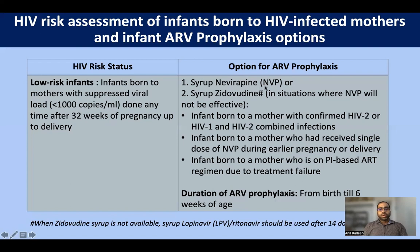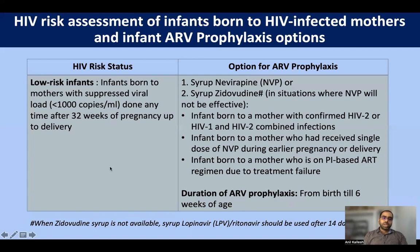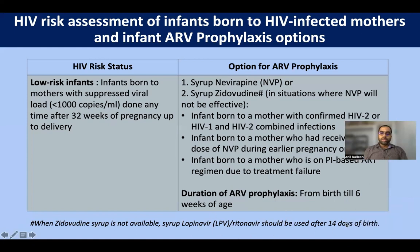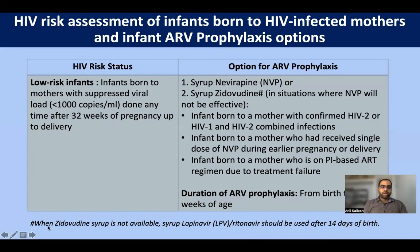Zidovudine is used instead of nevirapine in specific situations: infants born to HIV-2 positive or HIV-1 and 2 co-infected mothers, mothers previously given single-dose nevirapine in a prior pregnancy, or mothers on a protease-inhibitor-based regimen. Prophylaxis is given for six weeks in low-risk infants. If syrup zidovudine is not available, syrup lopinavir/ritonavir can be used, but not in the first two weeks of life; for the first 14 days, nevirapine syrup is used, then switch to lopinavir/ritonavir.